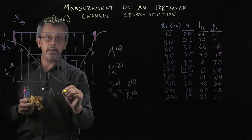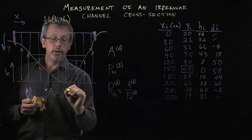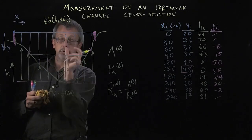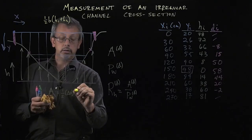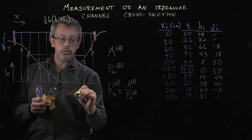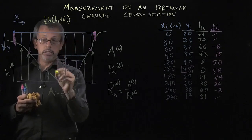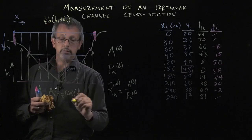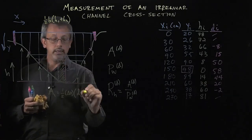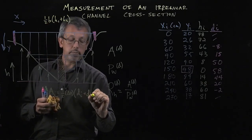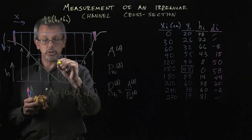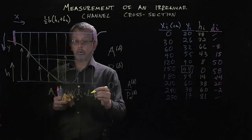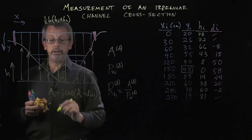So in this case, our base: we have one-half, our base is delta x, the distance between. And our heights are our two depths. In this case, we'll take the depths on either side here, d_i and then d_i+1, whatever the next one is. So these two depths here. And that will give us one of these areas.